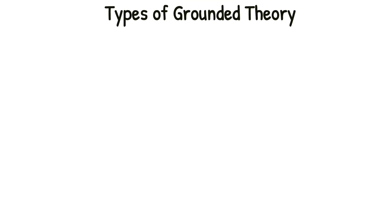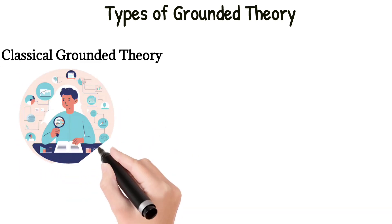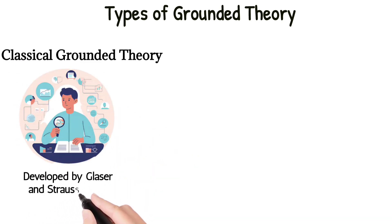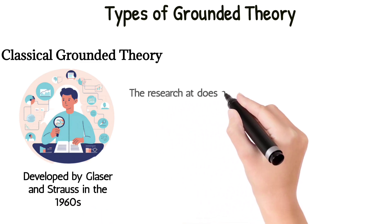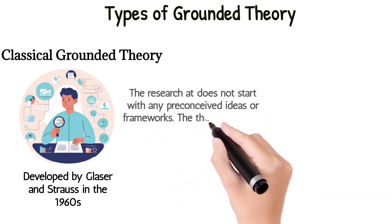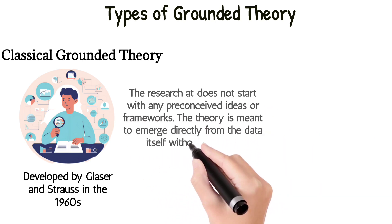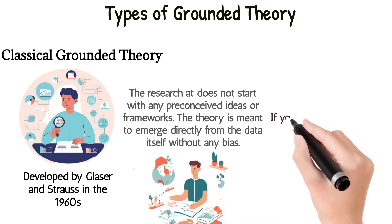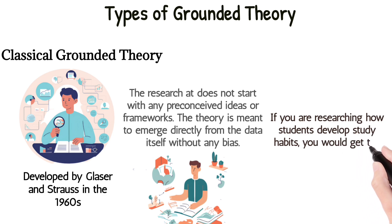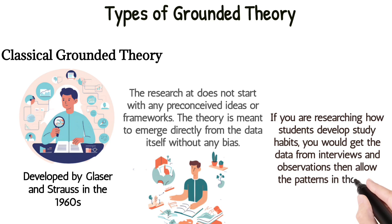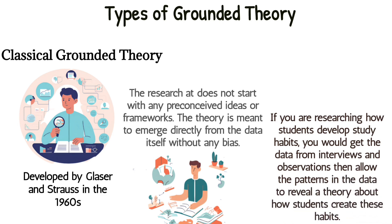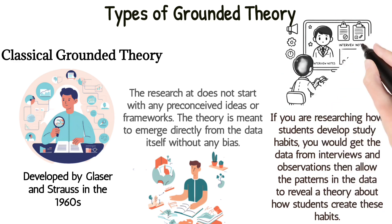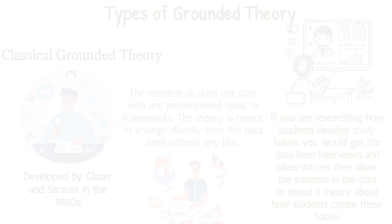Now let's break down the types of grounded theory with real-world examples. First, we have classical grounded theory, developed by Glaser and Strauss in the 1960s. In this approach, the researcher doesn't start with any preconceived ideas or frameworks. The theory is meant to emerge directly from the data itself, without any bias. For example, if you're researching how students develop study habits, you would gather data from interviews and observations, then allow the patterns in the data to reveal a theory about how students create these habits. You don't begin with assumptions — you let the theory develop naturally.